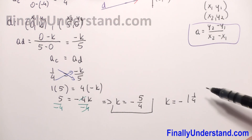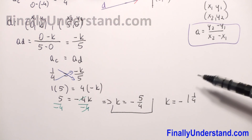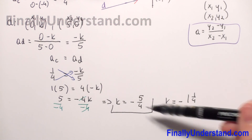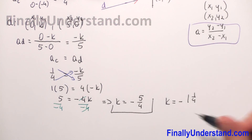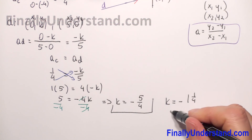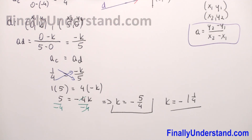You can change this improper fraction to a mixed number, so K is equal to negative 1 and 1 over 4. It depends which form your solution requires — mixed number or improper fraction, both are the same. This is the solution.